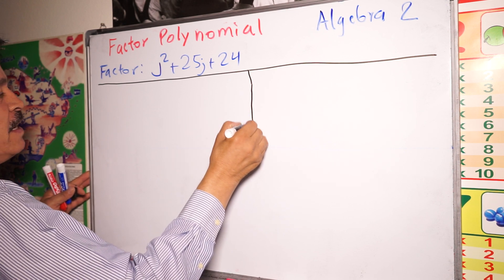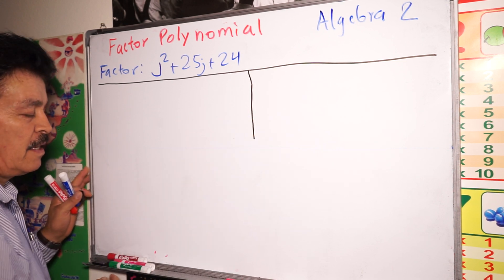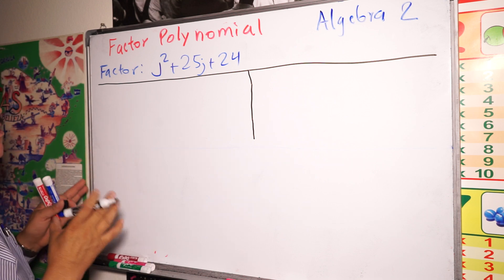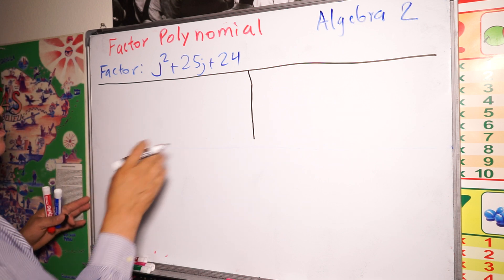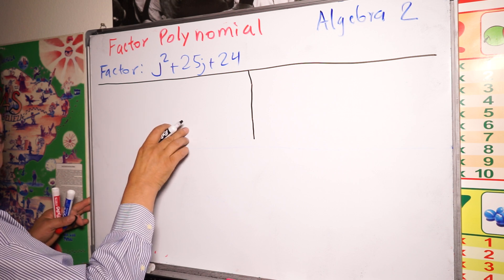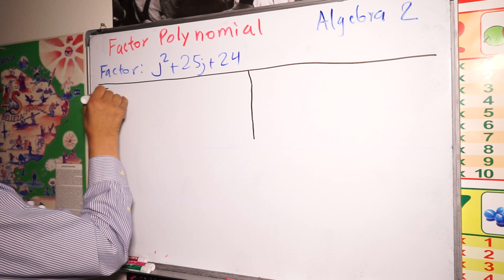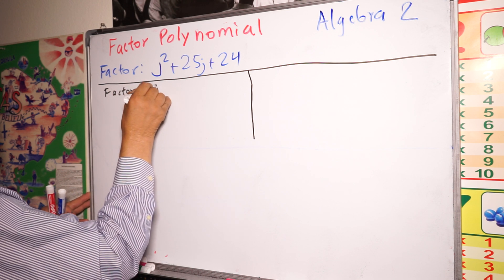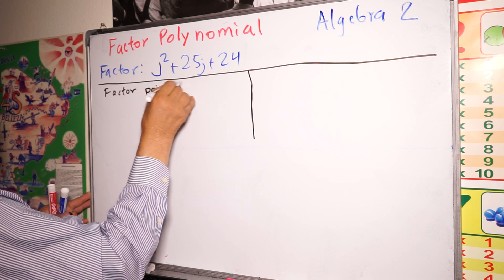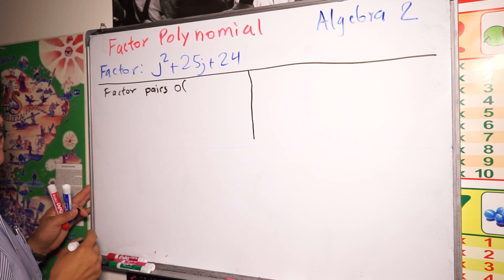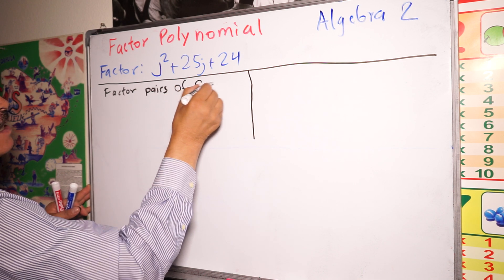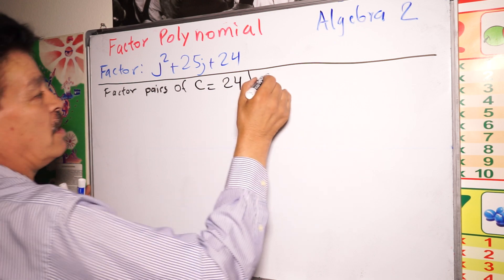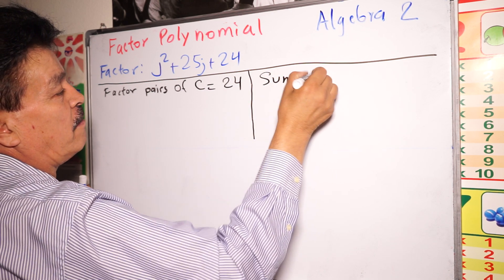Just like before, we'll use the factor pairs table to easily find the numbers we need. On one side is the factor pairs of c, and in this case c equals 24.